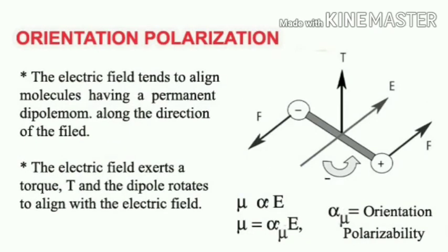Thirdly, we have orientation polarization. When a molecule is placed in an electric field, the field tends to align molecules having a permanent dipole moment along the direction of the field. The electric field exerts a torque on the electric dipole, causing the dipole to rotate and align with the field, giving rise to orientation polarizability. The induced dipole moment is directly proportional to the electric field strength: mu = alpha_mu × E, where alpha_mu is the corresponding orientation polarizability.